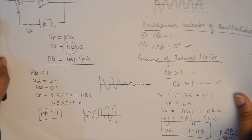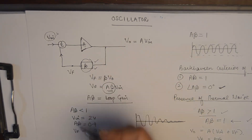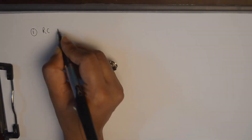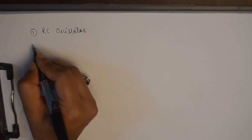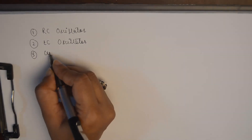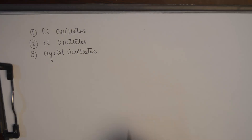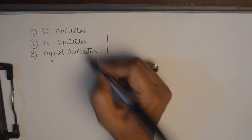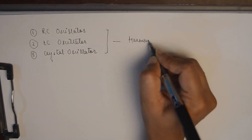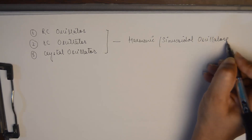Coming to the classification of oscillators: oscillators can be classified depending upon the feedback circuit being used. The kind of feedback circuit classifies an oscillator into three different types — namely RC oscillator, LC oscillator, and crystal oscillator. Please remember that all three types are harmonic oscillators, or in other words sinusoidal oscillators, and they are going to generate only sinusoidal oscillations.